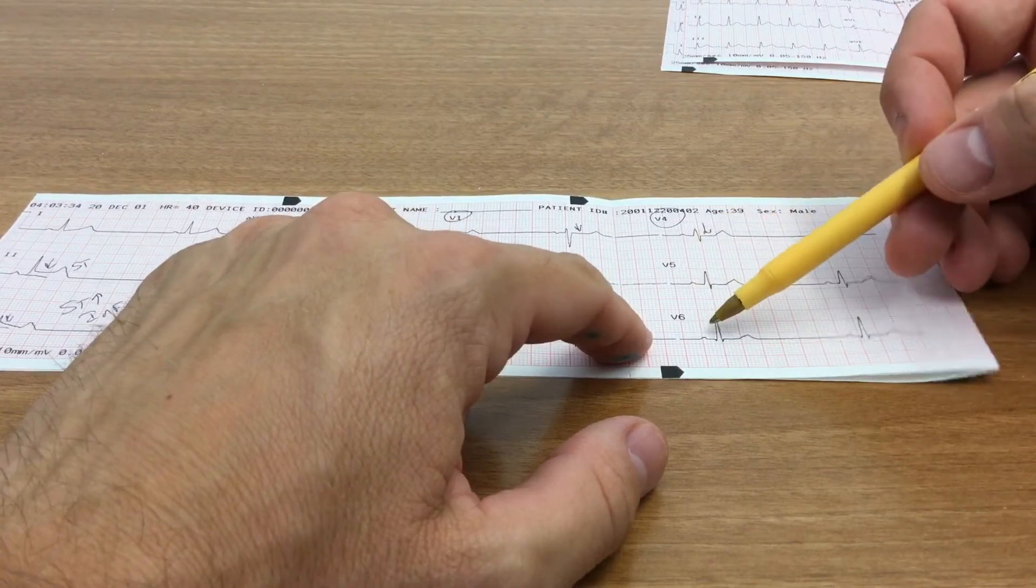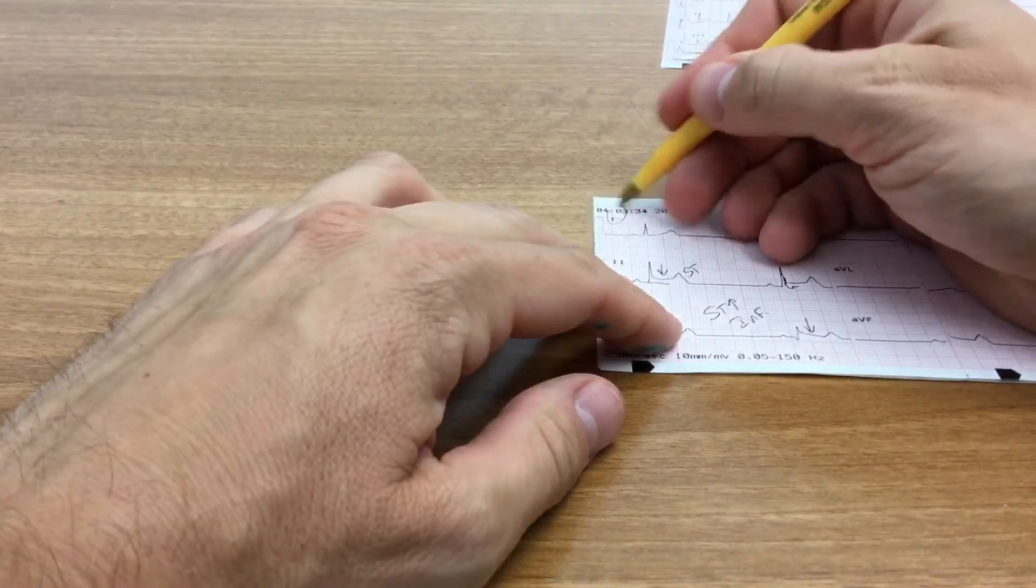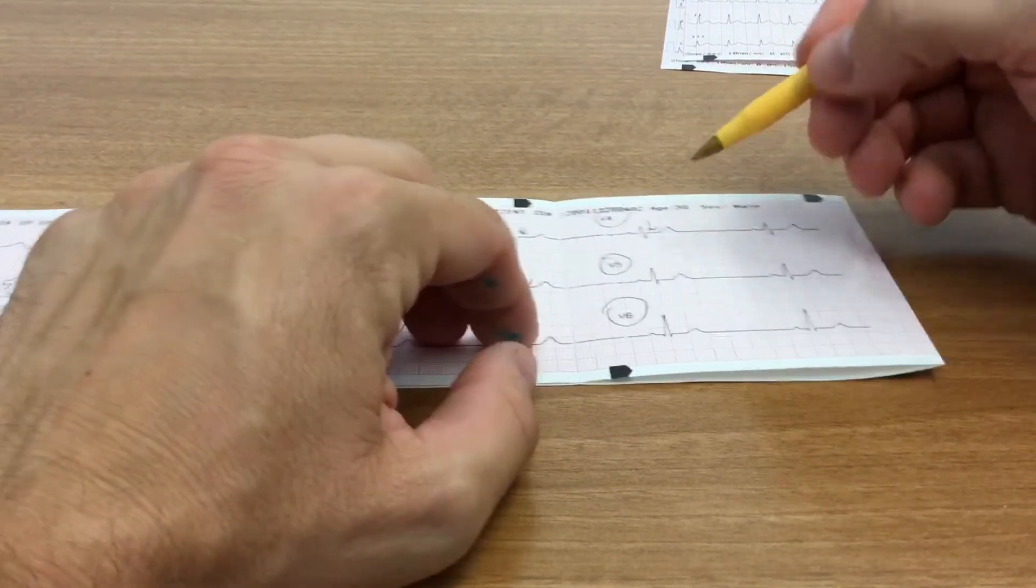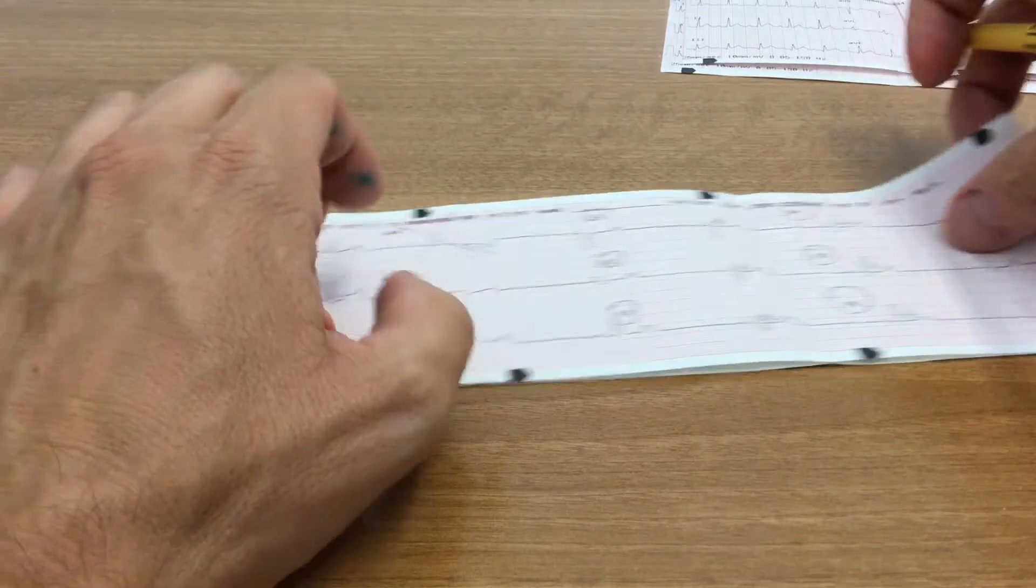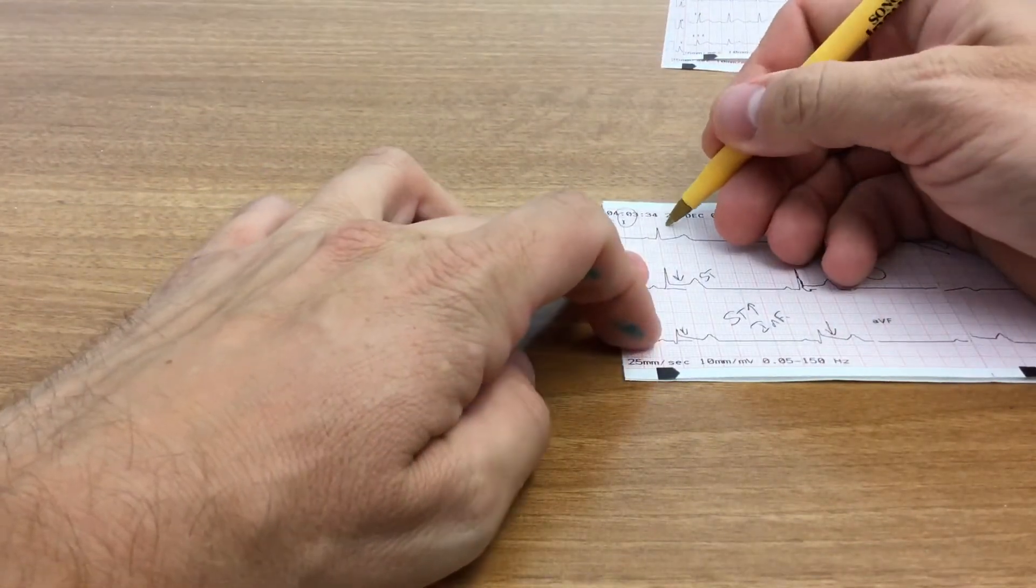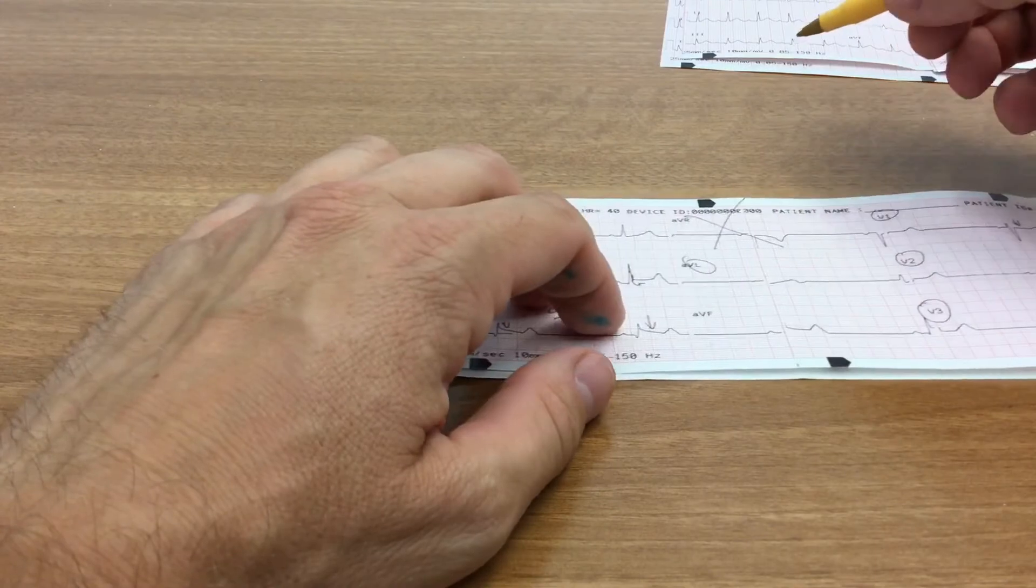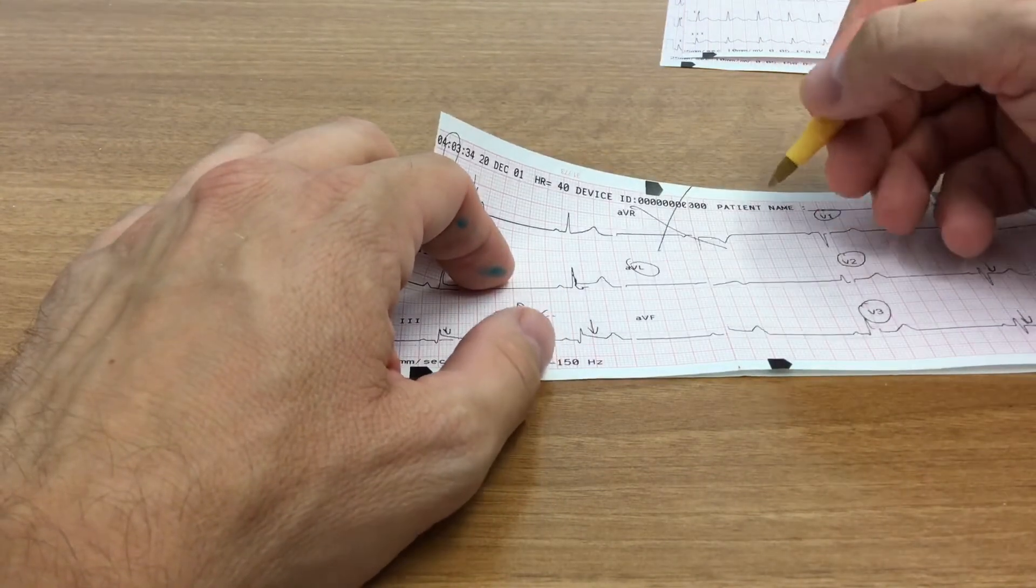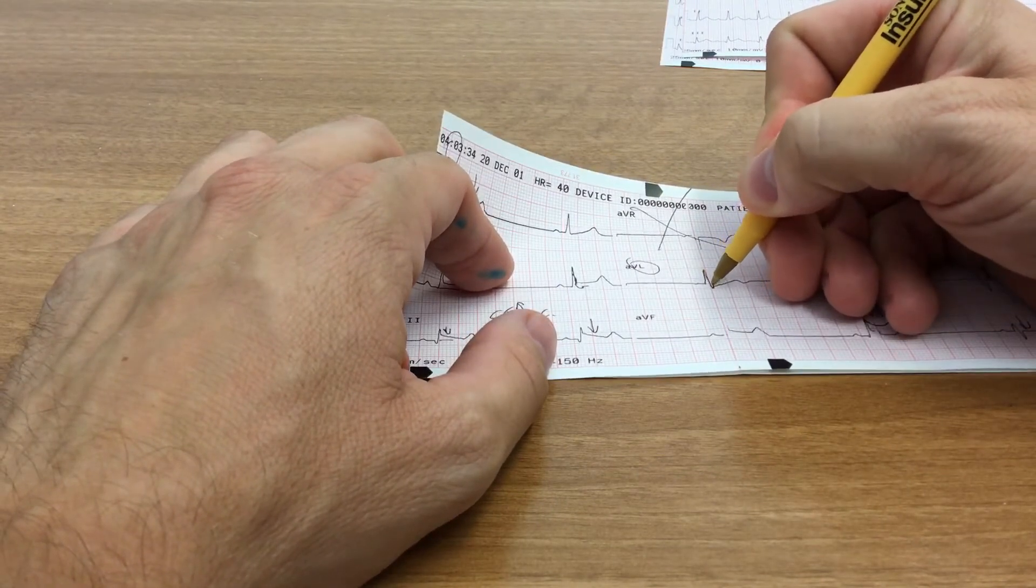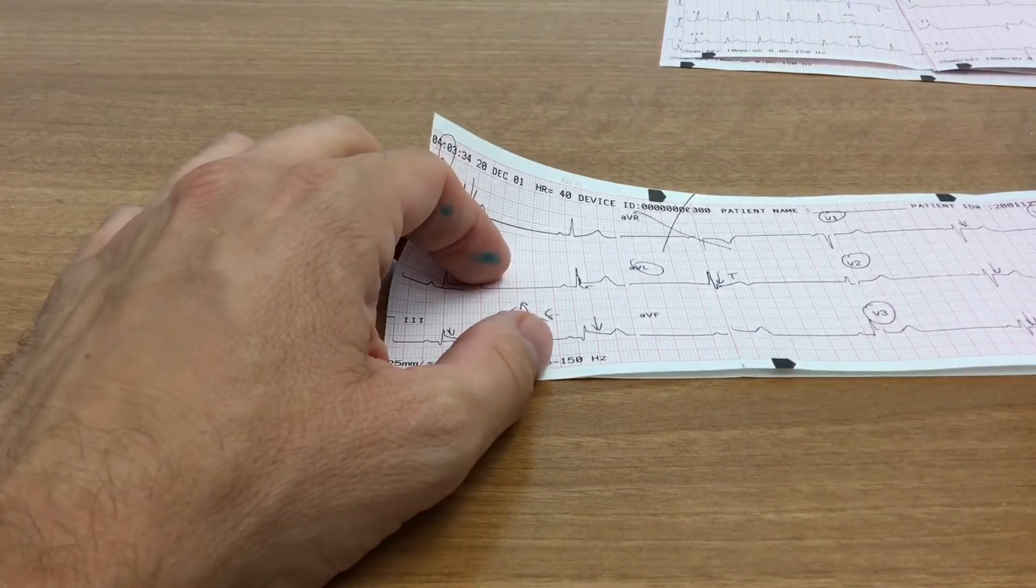And then finally, we'll move on to the lateral wall. V5, V6, 1 in augmented vector left. We don't really use AVR. So let's look at V5 here, normal J-point, V6. J-point's normal. No ST segment elevation or depression there. And then we look at lead one here. Okay. J-point comes down to baseline. And then you go into the T-wave. And then we look at AVL, which I don't actually have a very good... It was right along the line here when I printed it off. But I'll just draw the QRS in here. And you can see that it does return to baseline and then go into the T-wave there. So augmented vector left looks okay too.